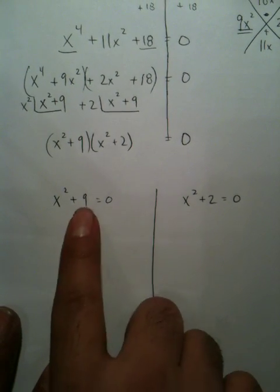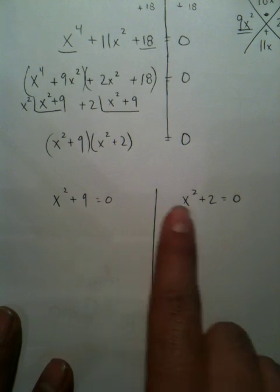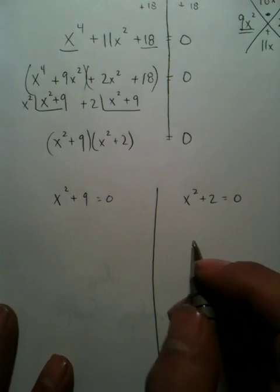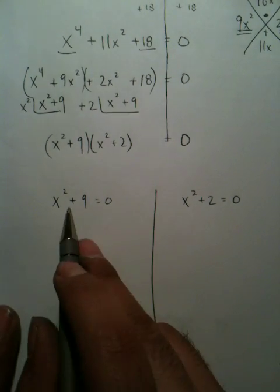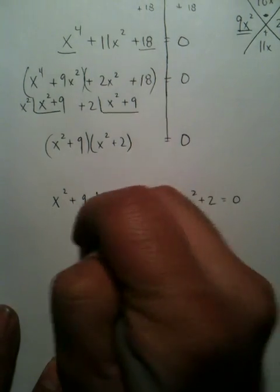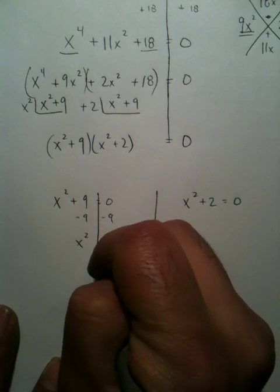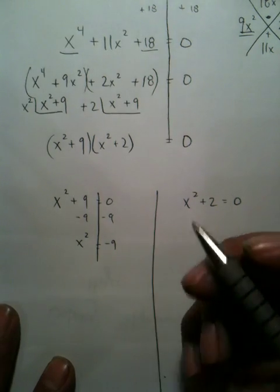Now, you can do quadratic formula. These are quadratics. You could do completing the square. Or, because there's no B term, meaning there's no term with an x, you can simply just use the inverse operations, and you can get x isolated in a shorter method.